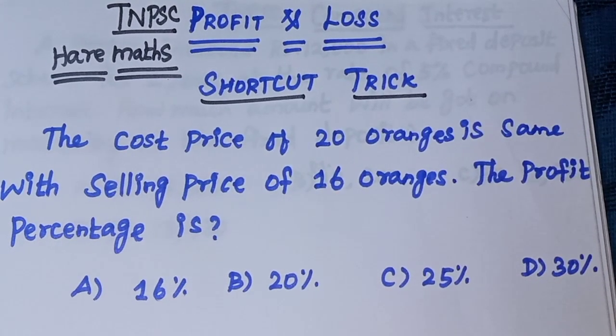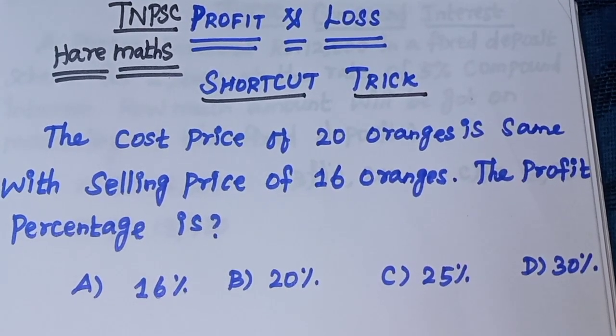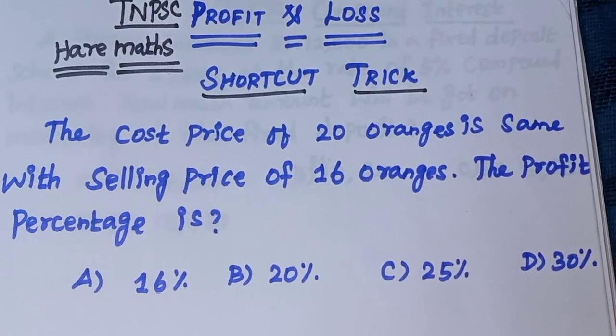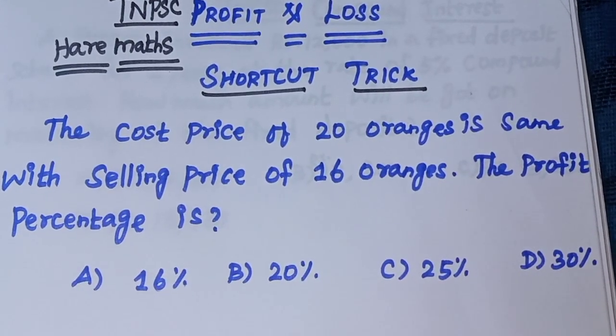of 16 oranges. What is the profit percentage? Option A: 16%, Option B: 20%, Option C: 25%, and Option D: 30%.